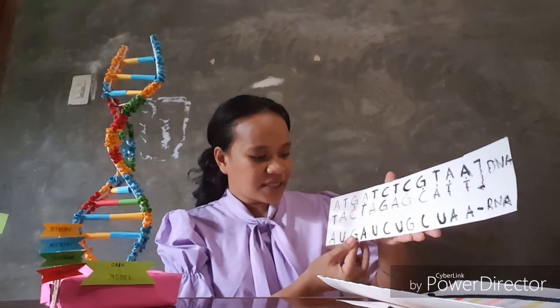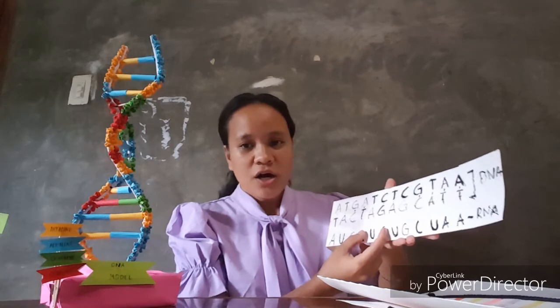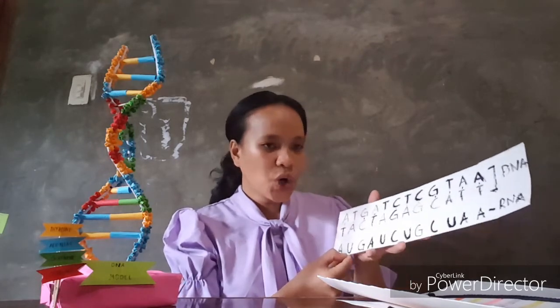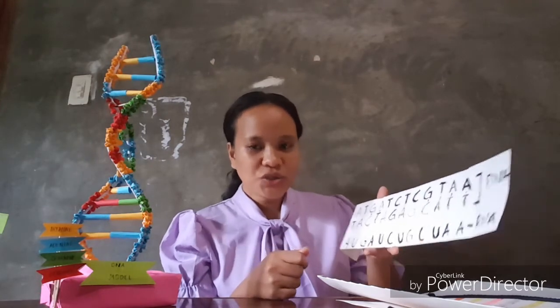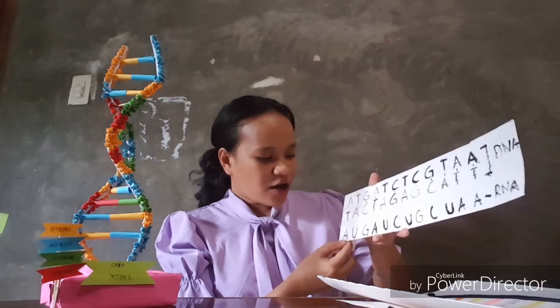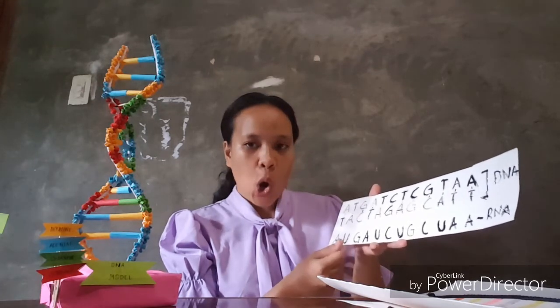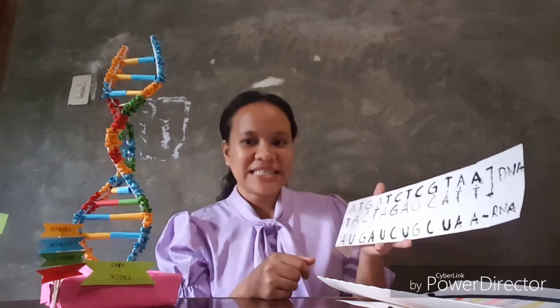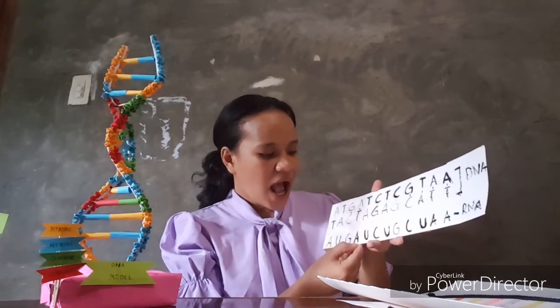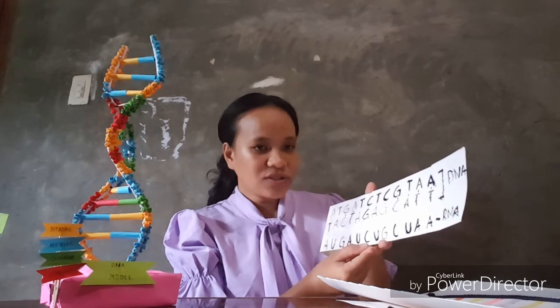Adenine, uracil, and guanine are three nucleotides. Adenine, uracil, and cytosine are also three nucleotides, and so forth. If we go through with codons, adenine, uracil, and guanine will stand for MET. I also have adenine, uracil, and cytosine in the codon chart — it has ILE.